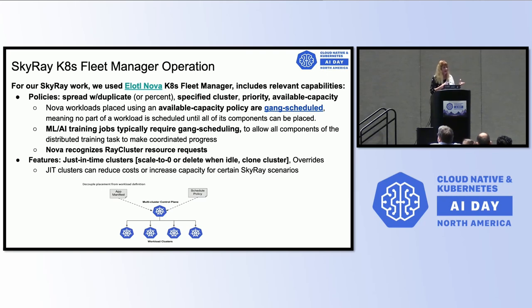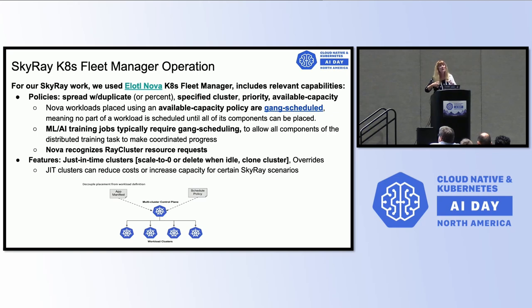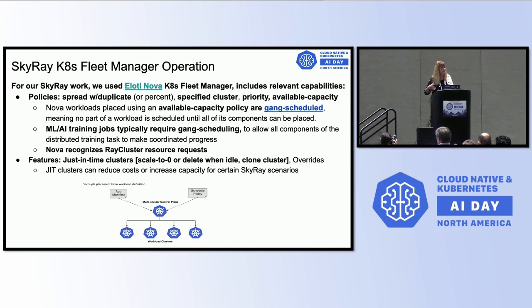For our work, we used the NOVA fleet manager. It supports the spread-duplicate policy, the specified cluster policy, and the priority policy. In particular, it supports an available capacity policy — basically a gang scheduling policy that says don't place this set of jobs unless you can place them all together at once. ML/AI training jobs often require gang scheduling because distributed training needs workers to make progress in a coordinated fashion. NOVA also recognizes Ray cluster CRDs and understands the worker and head resource requests.